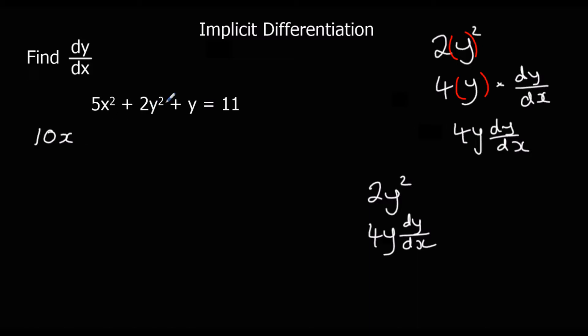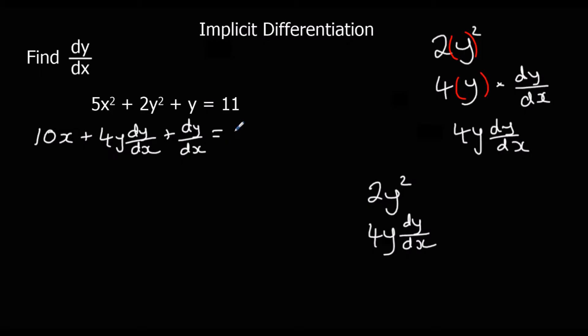So for 2y squared, we differentiate it normally and put dy/dx after it. And y differentiated is dy/dx — if we differentiated with respect to y, we get 1, and 1 times dy/dx is dy/dx. The constant 11 differentiated is 0. Now if we need to find dy/dx, we need to rearrange to make dy/dx the subject.